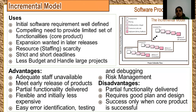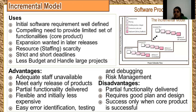The incremental model has projects delivered in increments. We see the first release or core product, the second release, and so on to the end release. It consists of five generic framework activities: communication, planning, modeling, construction, and deployment. These are the various generic framework activities taking place.